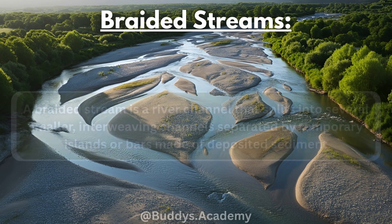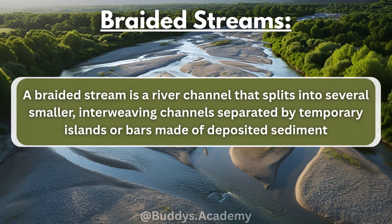So what are braided streams? A braided stream is a river channel that splits into several smaller interweaving channels separated by temporary islands or bars made of deposited sediment. These sediments can include things like sand or pebbles. Simply put, a braided stream forms when a river lays down sediment that blocks its own path, causing it to split into different smaller channels.